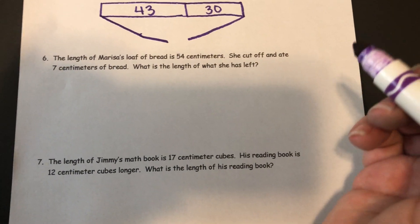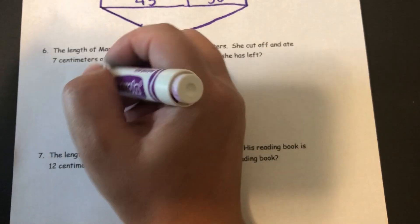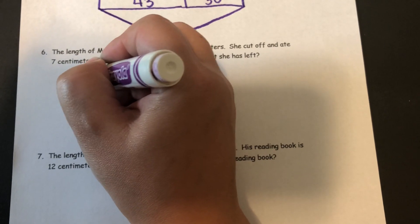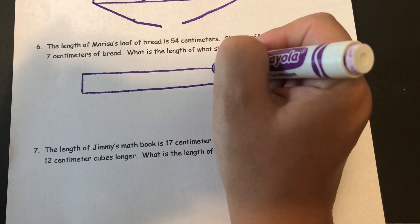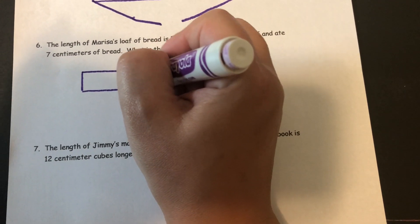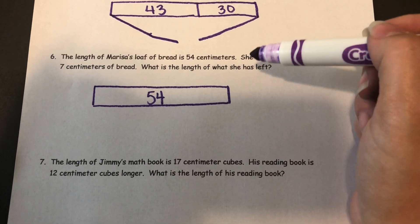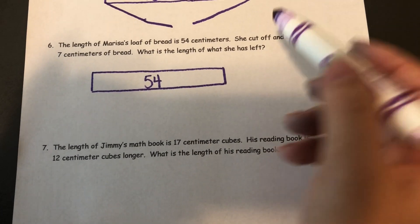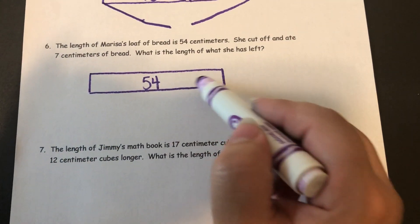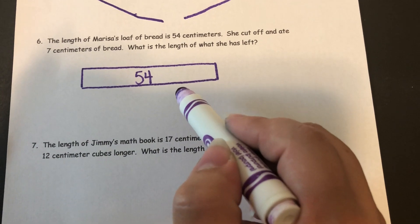Well, we know her bread started being 54 centimeters. So I'm going to use a tape diagram again. It originally was 54 centimeters. And what happened is she cut off some of it and ate it.